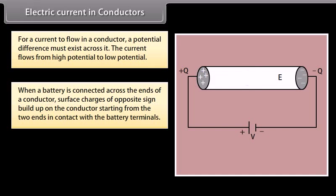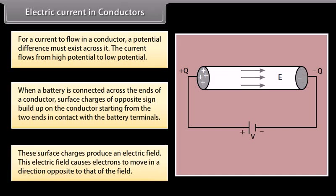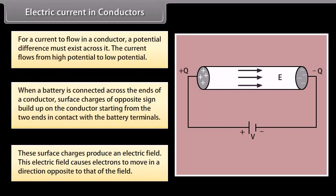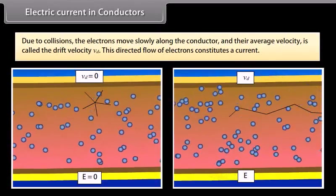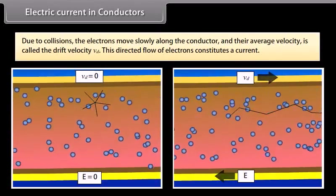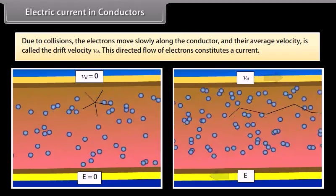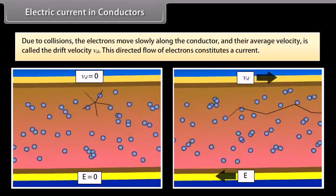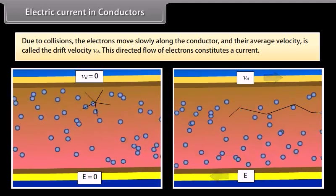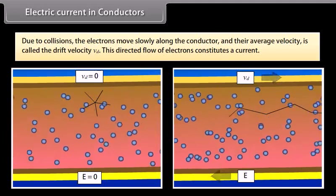These surface charges produce an electric field, which causes electrons to move in a direction opposite to that of the field. Due to collisions, the electrons move slowly along the conductor, and their average velocity is called the drift velocity V_D. This directed flow of electrons constitutes a current.